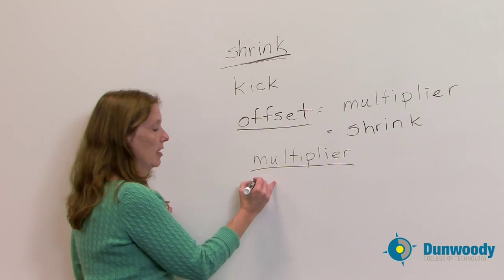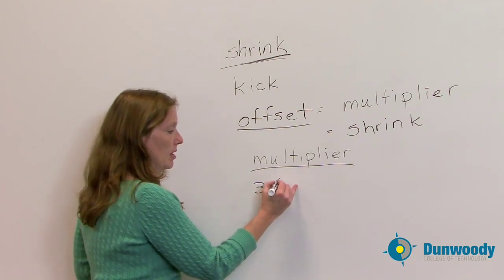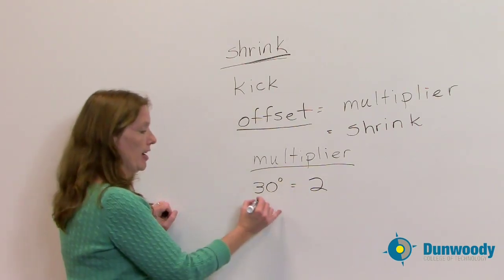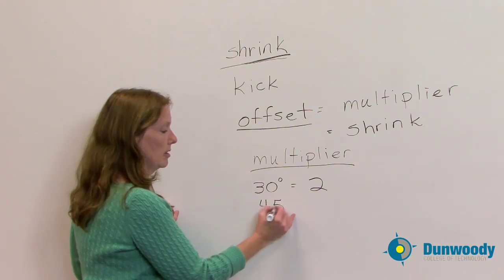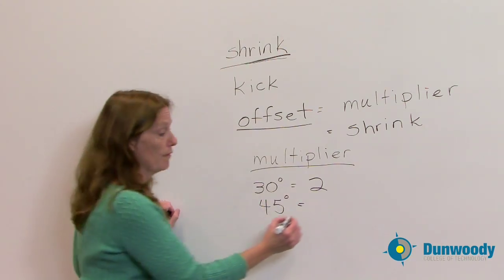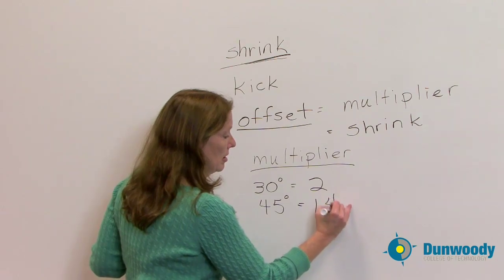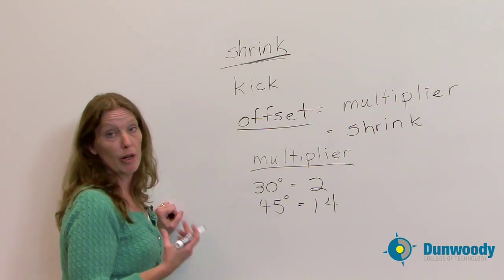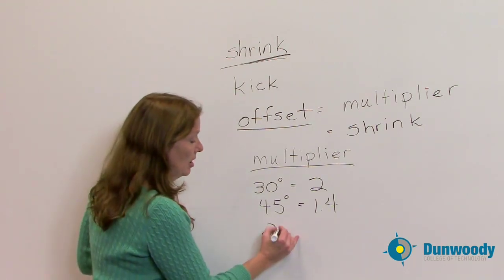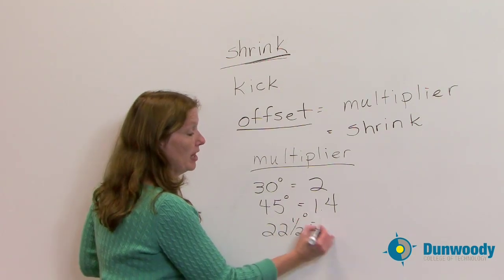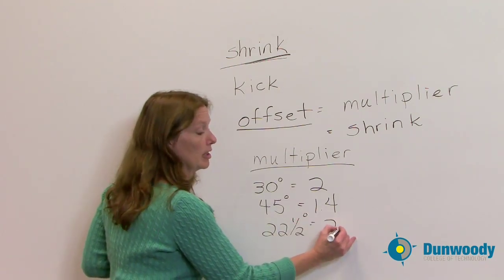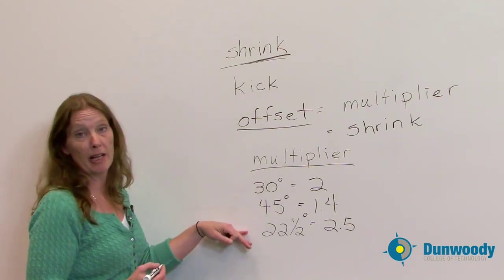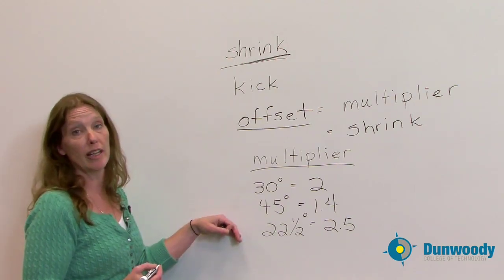So if I have a 30 degree bend, my multiplier is going to be 2. If I have a 45 degree bend, my multiplier is going to be 1.4. If I have a 22.5 degree bend, which is real common in my 3 bend saddles or in my offsets, I'm going to be having a multiplier of approximately 2.5. So these are some very common multipliers that you'll see out there and that you'll use on a daily basis.